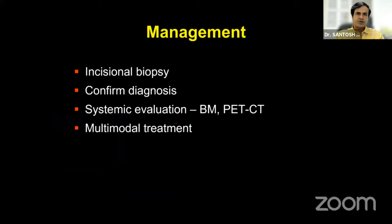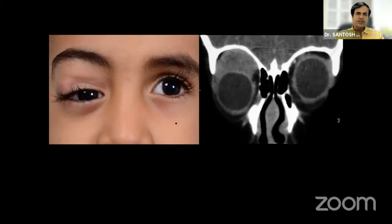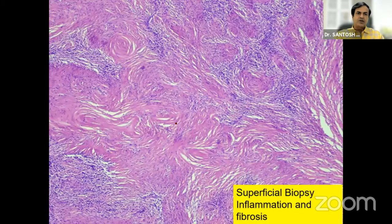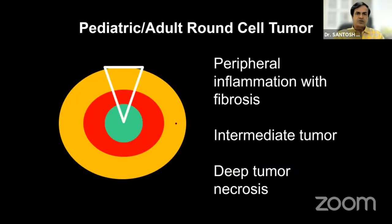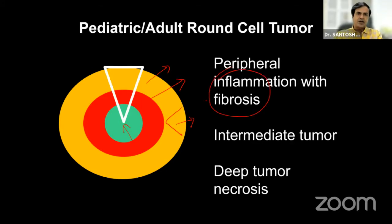The first step we take when we have a patient with rhabdomyosarcoma is to do an incisional biopsy — like this child with a superior orbital mass where we perform a multi-layered incisional biopsy. Superficial biopsy in this child showed only inflammation and fibrosis; the deeper biopsy showed the tumor — embryonal rhabdomyosarcoma, which was desmin and myogenin positive. When you have a round-cell tumor in children with an element of necrosis, the deepest component may have necrosis, the intermediate part generally shows viable tumor, and the periphery is tissue reaction with peripheral inflammation and fibrosis. If you take a superficial biopsy, you will end up with inflammation and fibrosis as a diagnosis, resulting in misdiagnosis and inappropriate management.